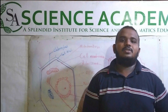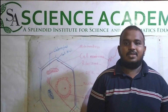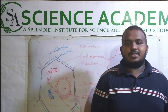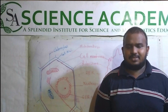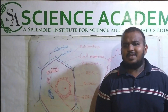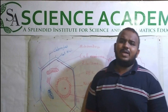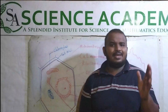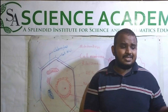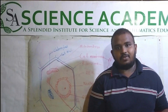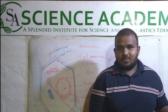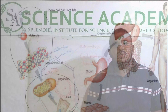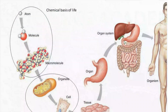Hi everyone. Today we are going to study about the structure and functions of animal and plant cells. We have studied the organizational levels, which start from atoms. We studied about atoms and molecules in our chemical basis of life.